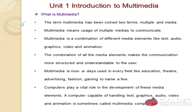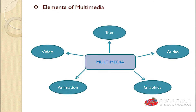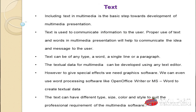There are different types of elements in multimedia: first text, second audio, third graphics, fourth animation, and fifth video. First, text — including text in a multimedia is the basic step towards development of a multimedia presentation. Text is used to communicate information to the user. Proper use of text and words in a multimedia presentation will help communicate the idea and message to the user.